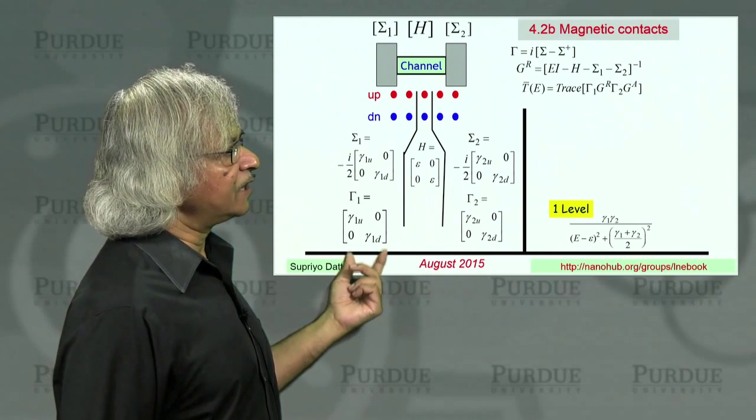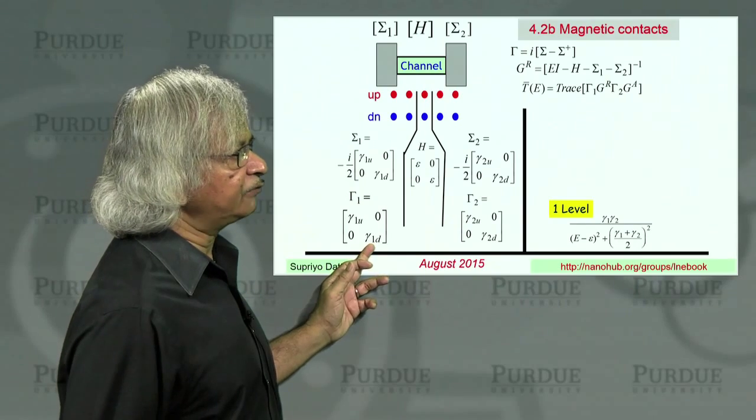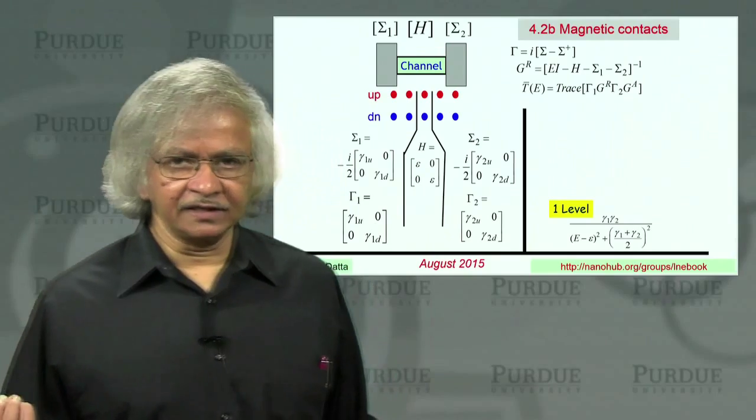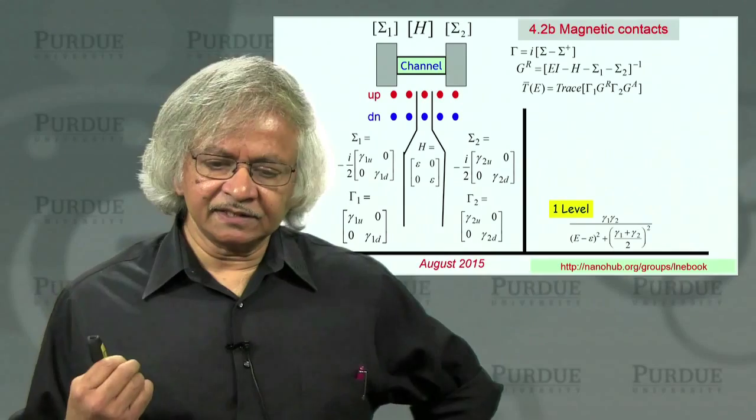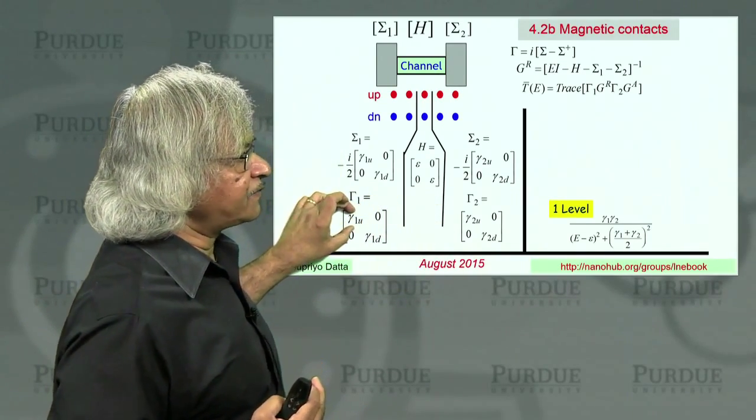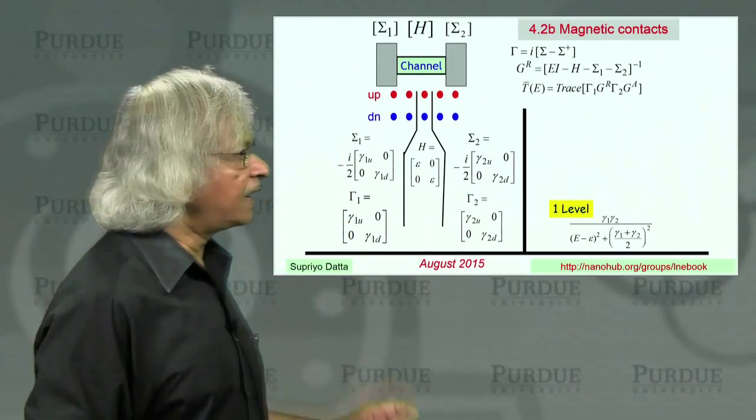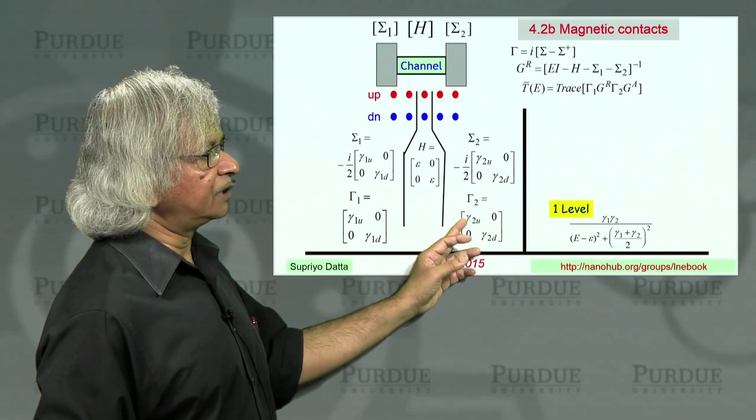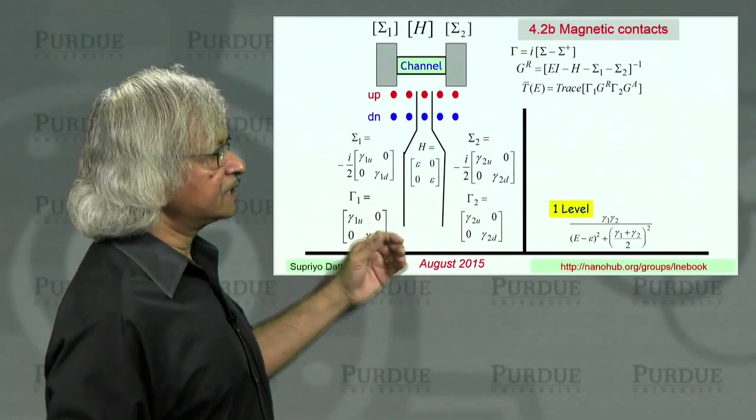So these are equal. It's a diagonal matrix. Both diagonal elements are the same. So that's like epsilon times the identity matrix. But when you write the gammas, that's when you have to note that up and down could have different gammas. Because as I mentioned earlier, the basic physics of these magnets is that one type of spin can go out easily compared to the other type of spin.